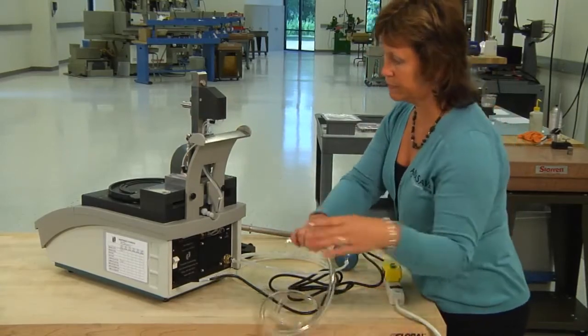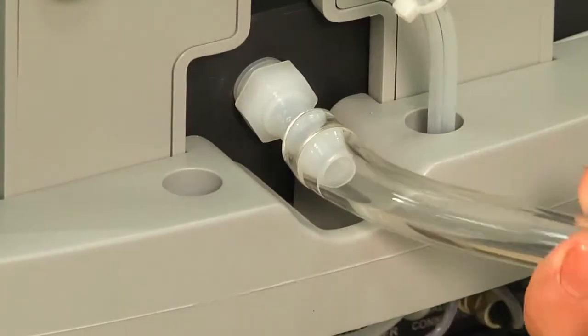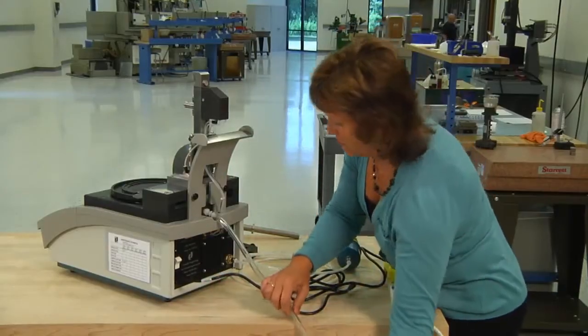Reattach the drain hose to the drain fitting on the back of the machine. Let the drain hose drape down into a bucket on the floor.